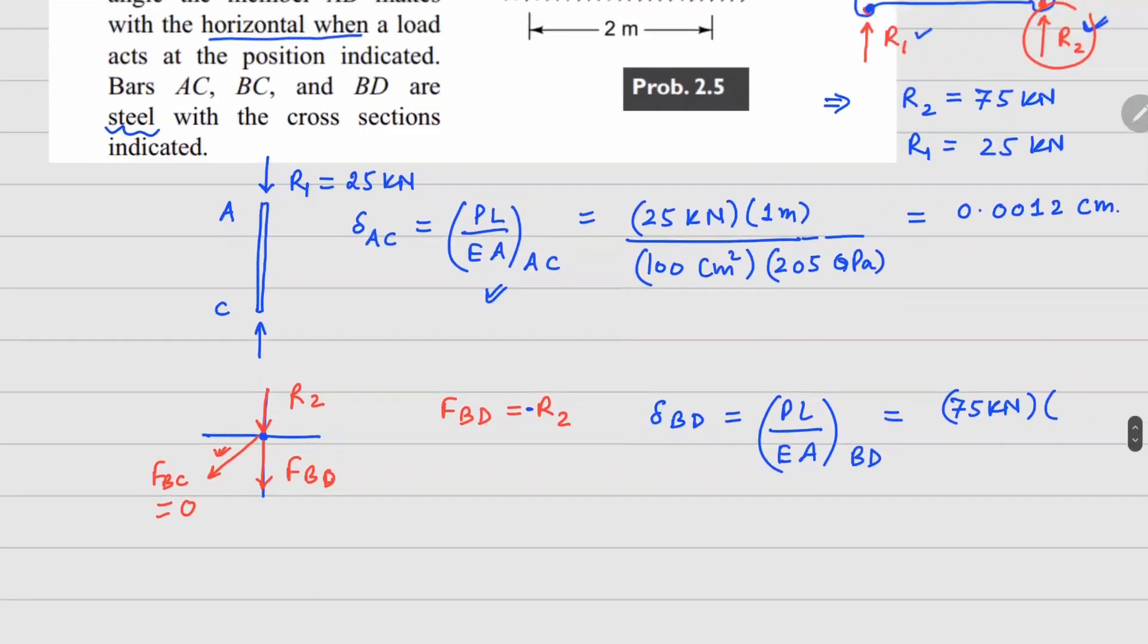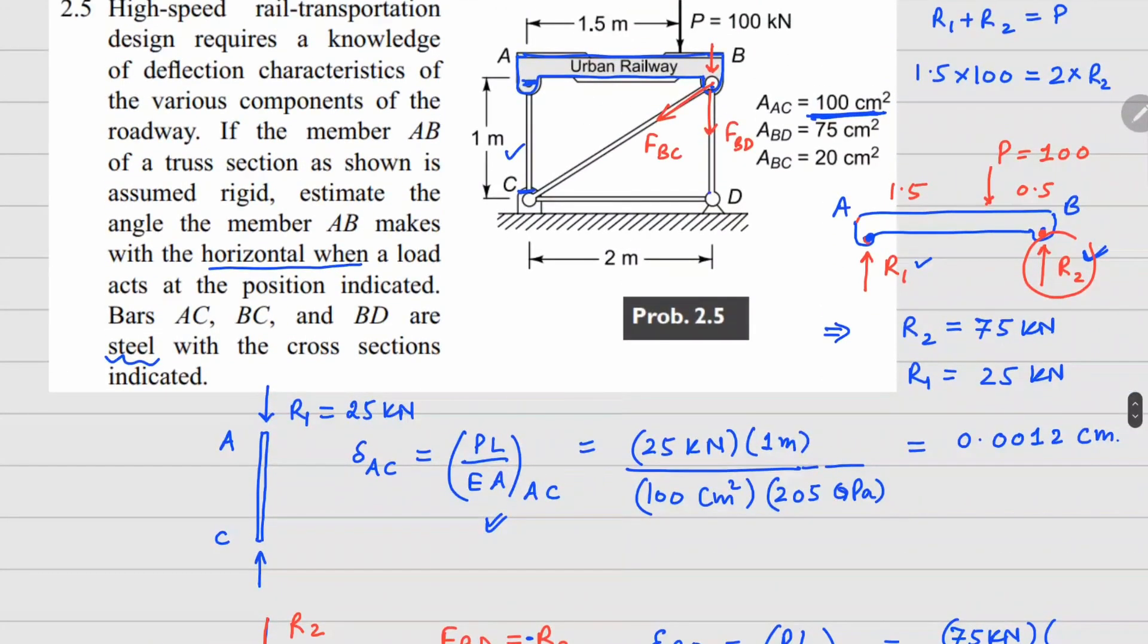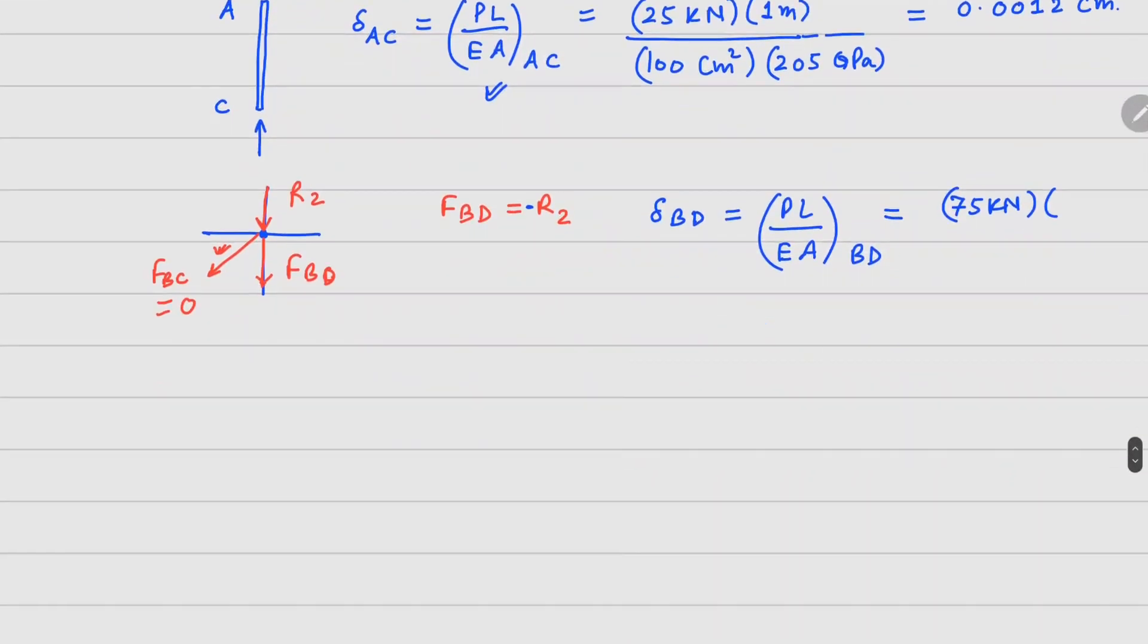L again same height, both of them BD is also same height. Area in this case is 75, so 1 meter goes here, area 75 centimeter square, and elastic modulus is 205 GPa again. So if I do this calculation, I get delta BD value as 0.0049 centimeters.